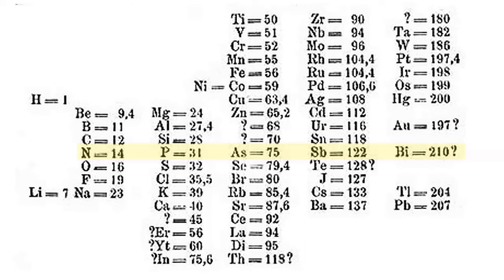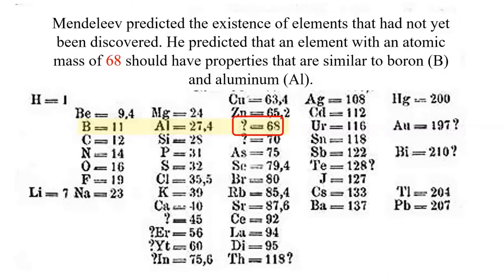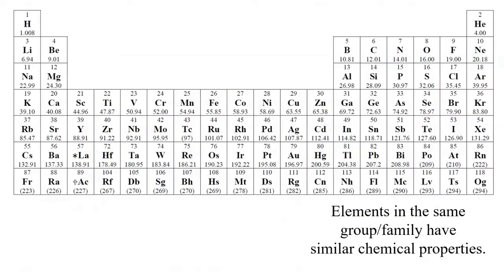Let's take a look at another part of Mendeleev's periodic table where that dash is located. We have boron, aluminum, and then a mystery element with atomic mass 68. Mendeleev predicted the existence of elements that had not yet been discovered. He predicted that an element with an atomic mass of 68 should have properties similar to boron and aluminum.